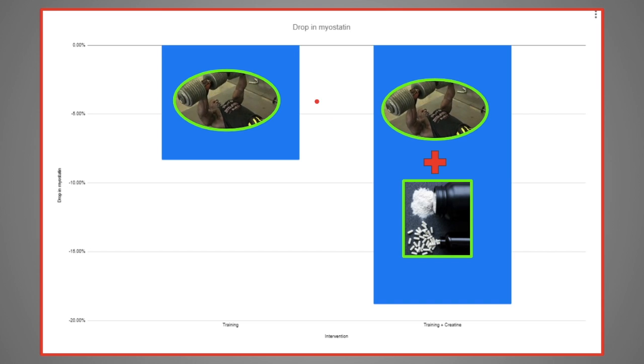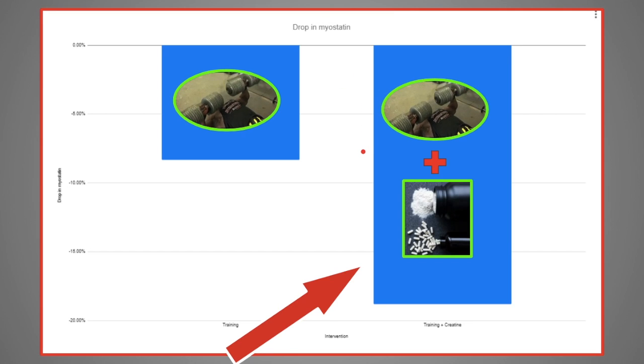The second way to significantly drop myostatin is creatine. I already made a video about that. Make sure you check it out. Here you can see the group on the left that just trained without creatine dropped myostatin by a small amount, whereas the group that trained with creatine had a huge drop in myostatin, which obviously leads to more gains.